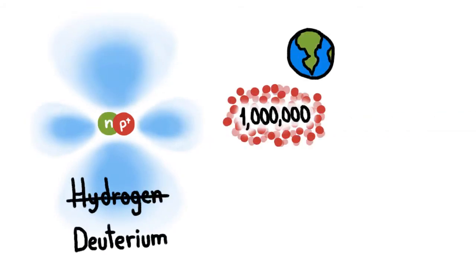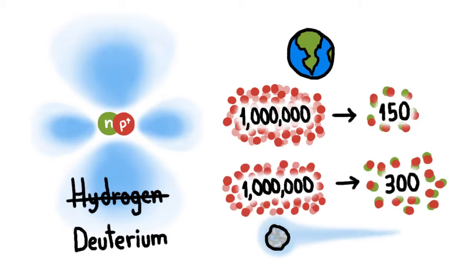For every million hydrogen atoms in Earth water, about 150 are heavy ones, while typical comet water has twice that many. These mismatched chemical signatures suggest that Earth's water couldn't have arrived on comets.